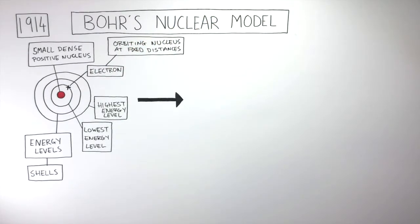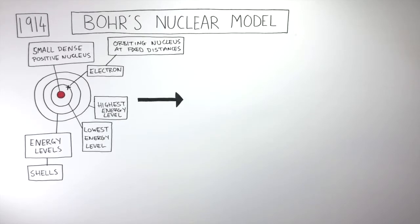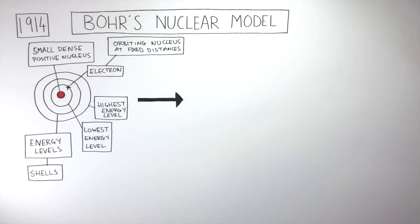Dalton said there were no electrons. Thompson said electrons were embedded throughout the positive sphere. Rutherford said electrons were orbiting at random locations around the nucleus. Whereas Bohr was the first person to say electrons are orbiting the nucleus at fixed distances. And we're now going to find out how he came up with this idea.